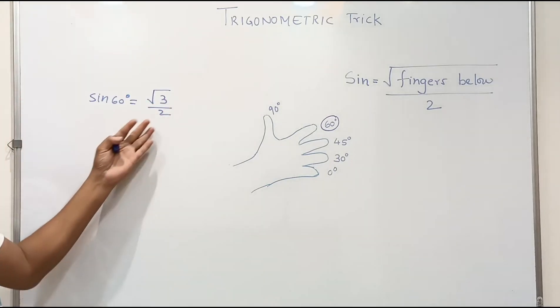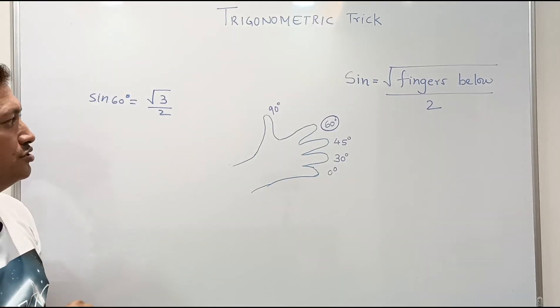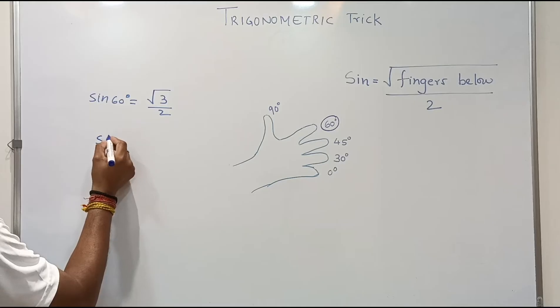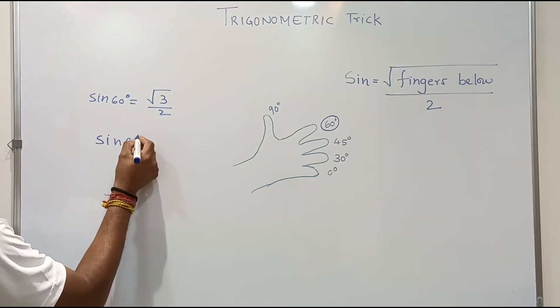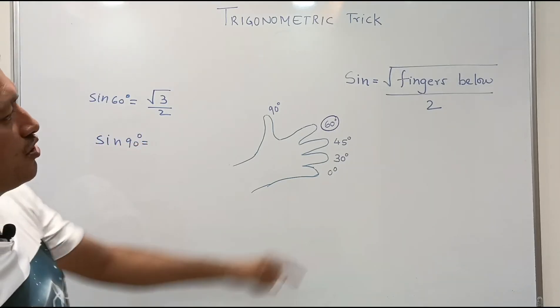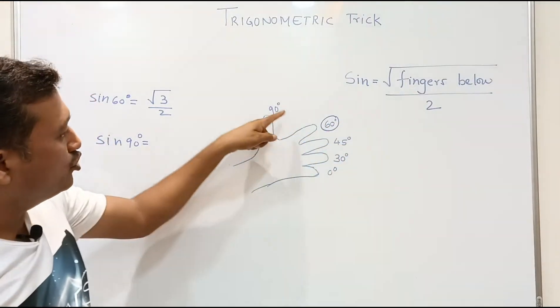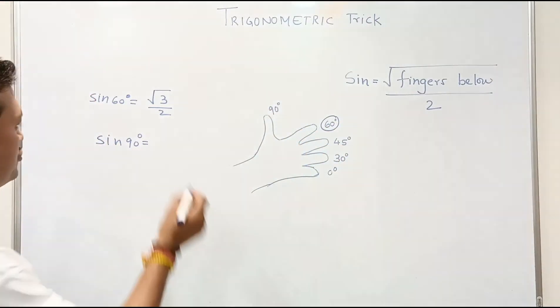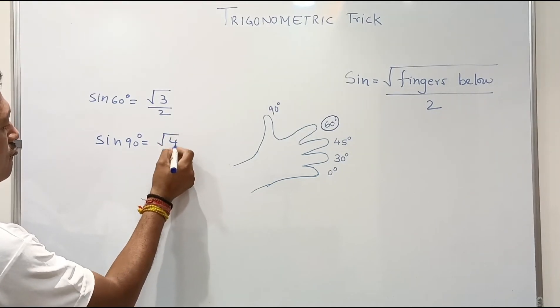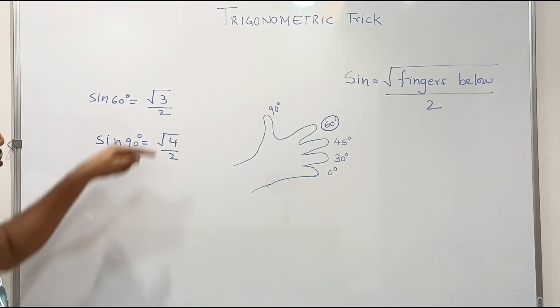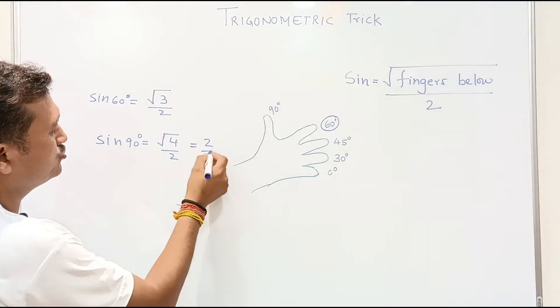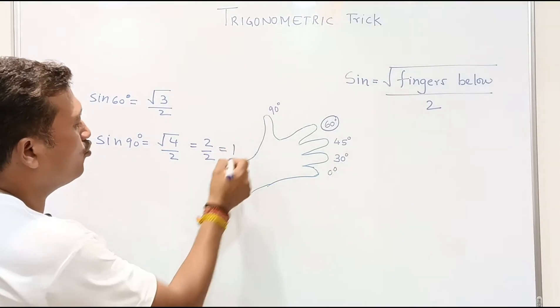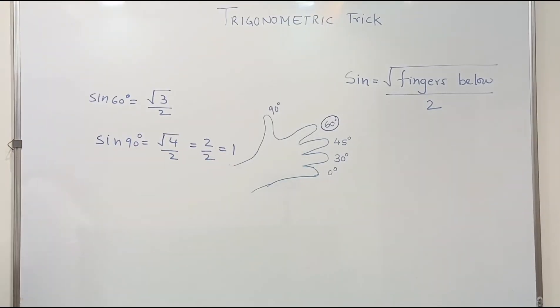Suppose you want to find sine of 90 degrees. Sine 90 degrees equals square root of fingers below. Below 90 degrees there are four fingers: 1, 2, 3, 4. So it's square root of 4 over 2, and square root of 4 is 2. So 2 over 2 equals 1. So sine 90 is 1.